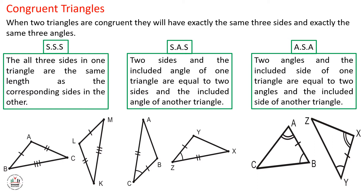But if side AC equals side ZY, for example, and side AB is not given as equal to XY, then these two triangles are not considered congruent triangles, because sides AC and ZY are not the included side between two equal angles.